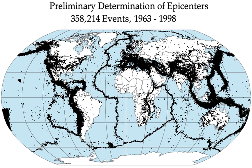Examples are the earthquakes in Chile 1960, Alaska 1957, and Sumatra 2004, all in subduction zones. The longest earthquake ruptures on strike-slip faults, like the San Andreas Fault, the North Anatolian Fault in Turkey, and the Denali Fault in Alaska, are about half to one-third as long as lengths along subducting plate margins, and those along normal faults are even shorter.